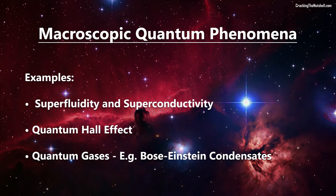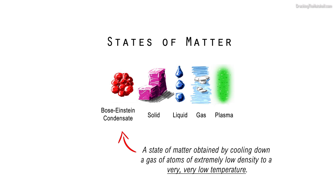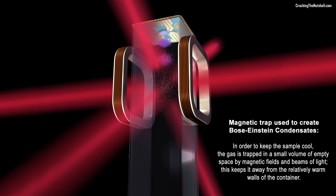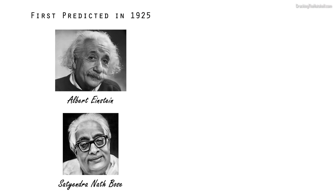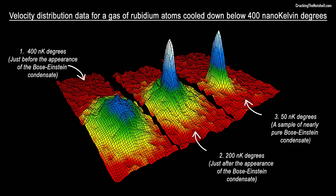Having said that, there are indeed very interesting cases where the strange world of quantum mechanics does manifest in an obvious way in macroscopic objects. For instance, have you ever heard of Bose-Einstein condensates? A Bose-Einstein condensate is a state of matter obtained by cooling down a gas of atoms of extremely low density to a very, very low temperature. In order to keep the sample cool, the gas is trapped in a small volume of empty space by magnetic fields and beams of light. This keeps it away from the relatively warm walls of the container. This fascinating state of matter was first predicted by Albert Einstein and Satyandranath Bose in 1925, although it was not until 1995 that the first condensate was successfully produced in the lab.